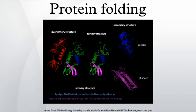Amino acids interact with each other to produce a well-defined three-dimensional structure, the folded protein, known as the native state. The resulting three-dimensional structure is determined by the amino acid sequence.